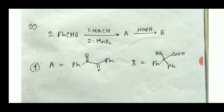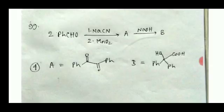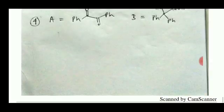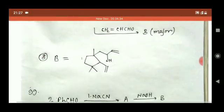For question number 99, the first step is a benzoin condensation. The product is then oxidized by MnO2 to give two adjacent carbonyl groups — this is called benzil. When treated with sodium hydroxide, a benzilic acid rearrangement occurs, giving product B. Option 4 is the correct answer.